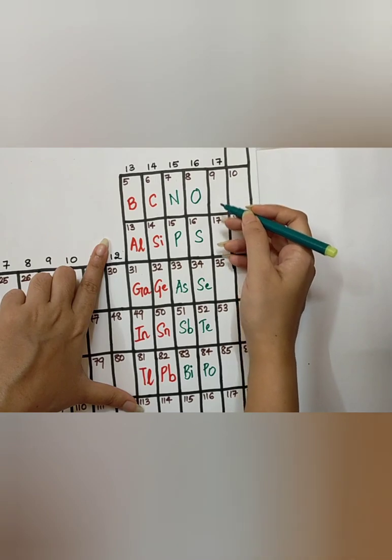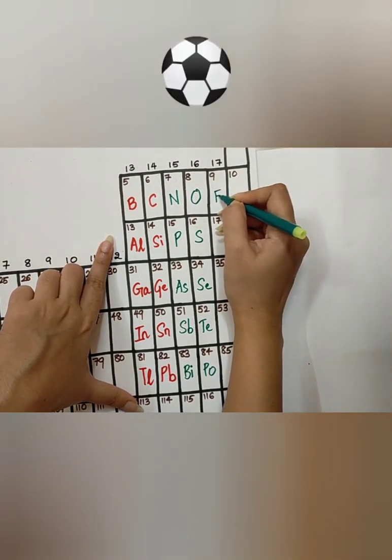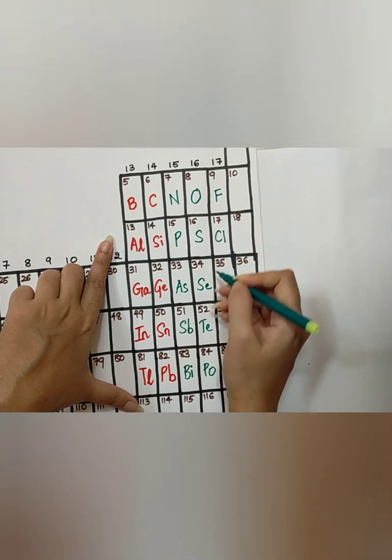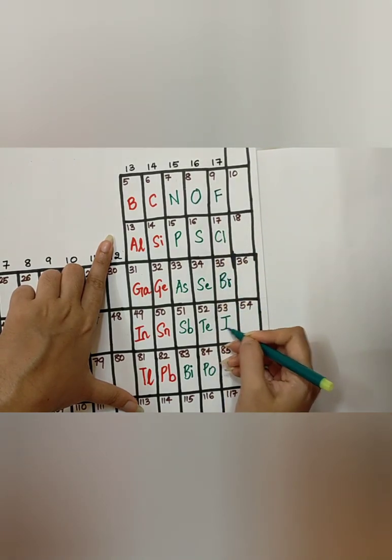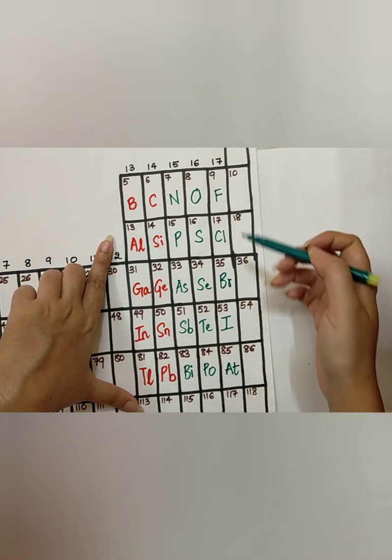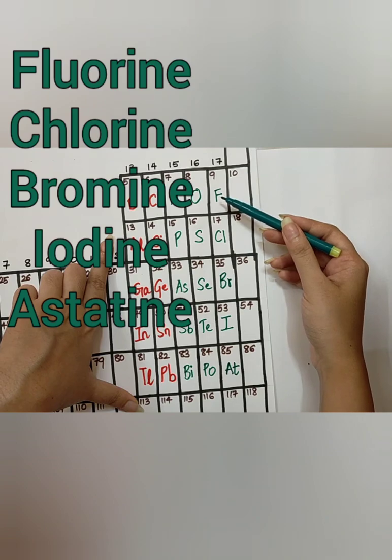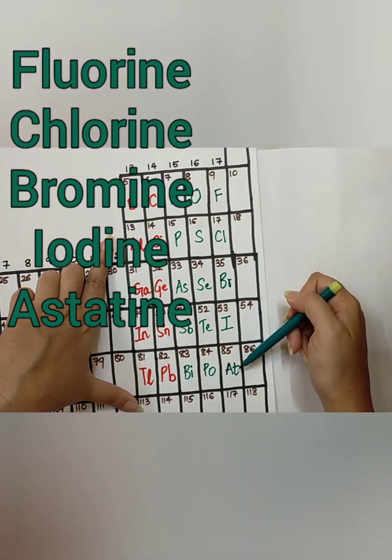Next is group 17, Football, Club, Barcelona, Inn, Austria. The elements are, Fluorine, Chlorine, Bromine, Iodine, and Astatine.